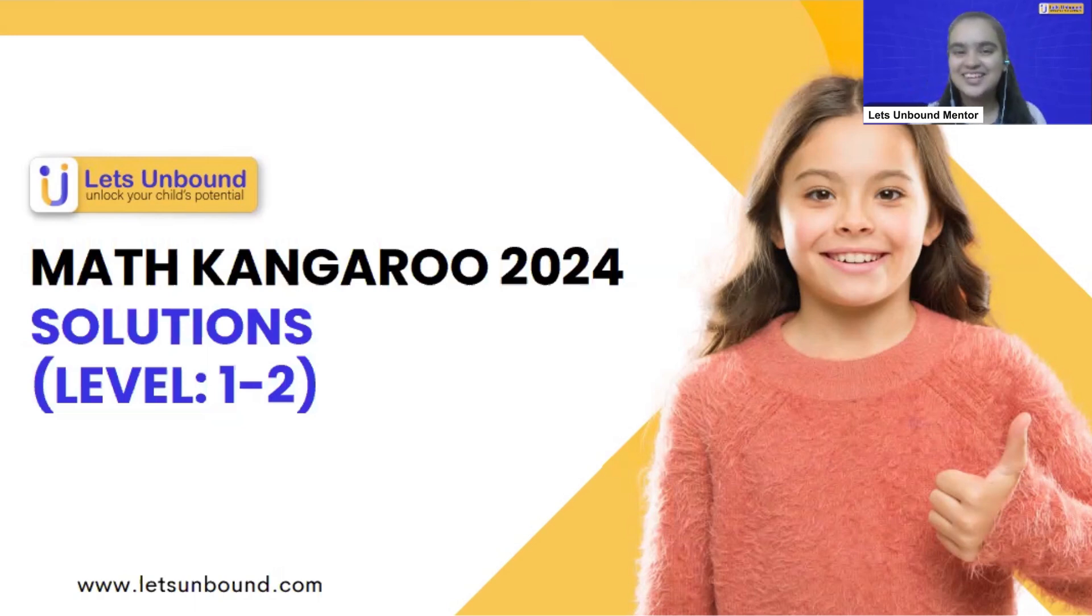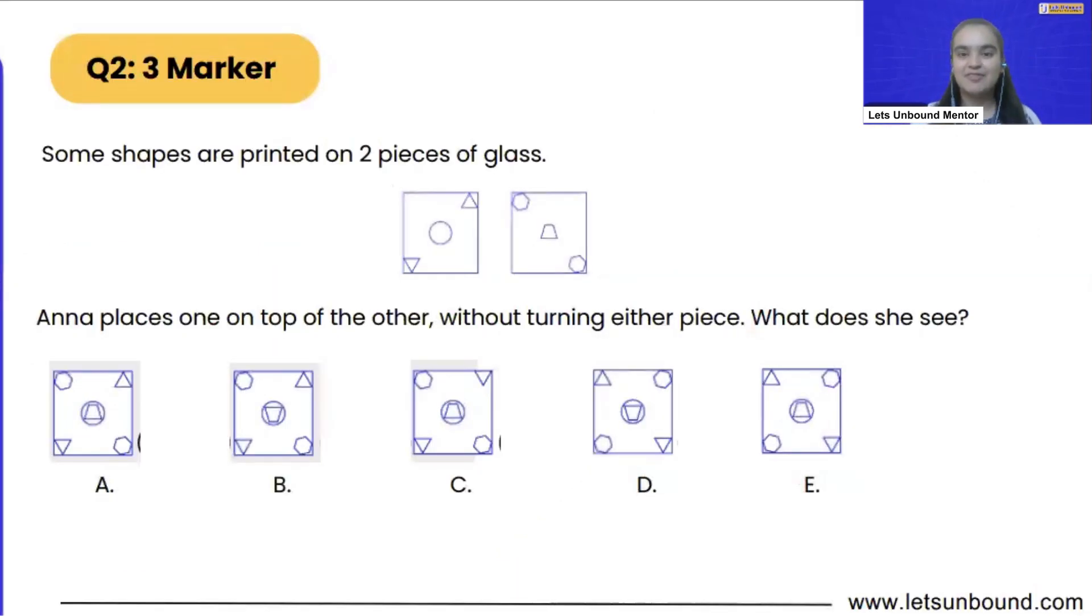Are you ready for today's question? Let's get started. Here we have our problem: some shapes are printed on two pieces of glass and are placed one on top of the other without turning either piece. So what does she see?